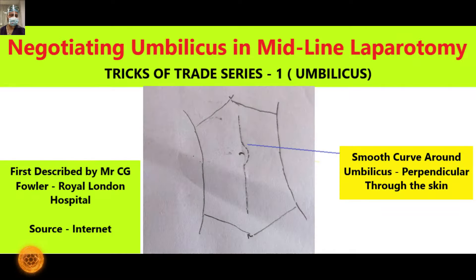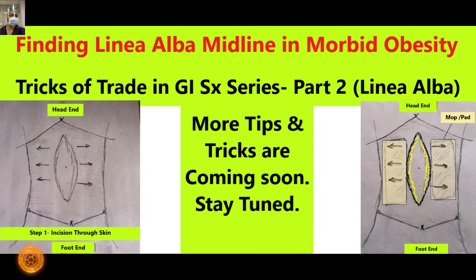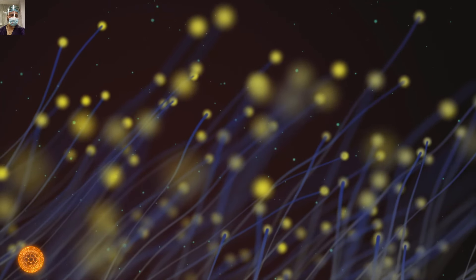In the first part of the Tricks of the Trade series, we discussed how to go around the plicusa for a beautiful scar. In the second part, we discussed how to gain a bloodless entry and how to identify the linea alba midline in obese patients, especially in morbid obesity.